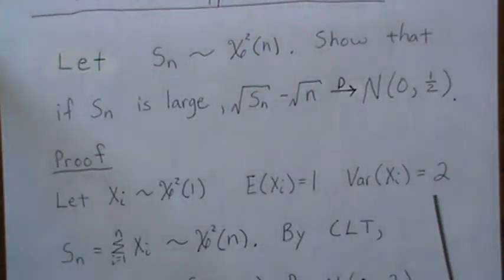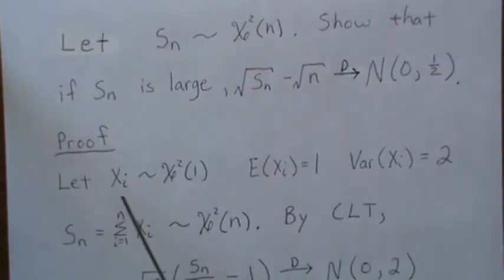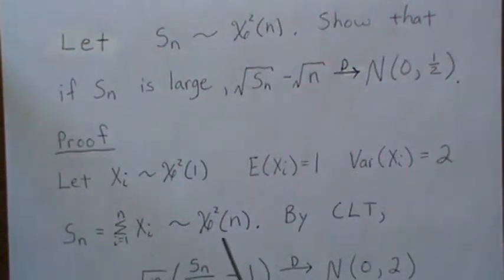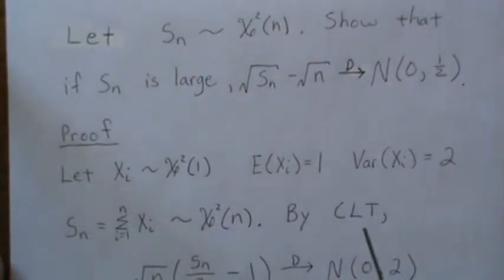The sum of these X_i's is chi-squared(n). So this random variable S_n acts like the sum of something. By the Central Limit Theorem, if we divide by n, so this becomes the mean of chi-squared(1) random variables.